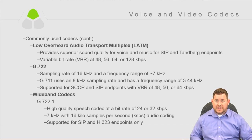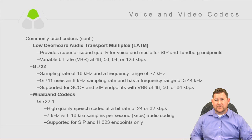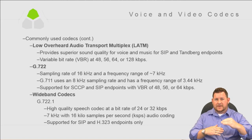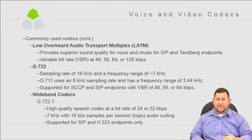G.722 has a sampling rate of 16 kilohertz and a frequency range of 7 kilohertz. In digital telephony, the standard sampling range for a phone is only about 3.5 kilohertz. G.722 gives you almost double that frequency range, so the theory is it gives you better audio quality. If you run G.722 and G.711 side by side, you'll notice a lot more bass in someone's voice because it's a higher quality frequency range.